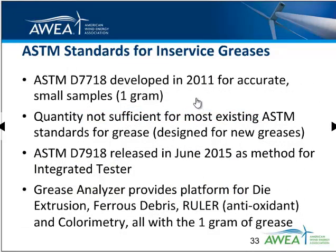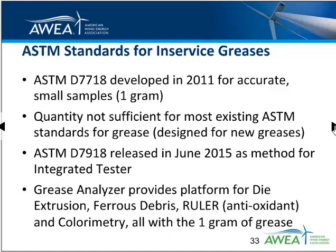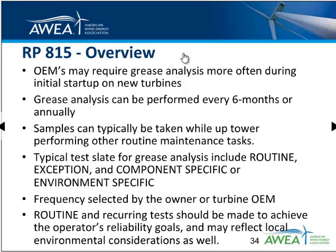The ASTM standards for in-service greases include D7718, developed in 2011 for taking small samples of about one gram. That quantity is not sufficient for most previously existing ASTM standards for grease, which were designed for new greases and batch testing. Earlier this year, ASTM released D7918, a method using an integrated tester. With the samplers outlined in D7718 and the analysis process in D7918, there's a method to take consistent one-gram samples and perform a number of tests, including ferrous debris levels, antioxidant levels, color variation — which can tell us the right grease is being used, if it's aging or contaminating — all with one gram of grease.